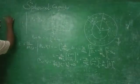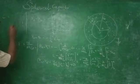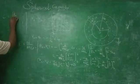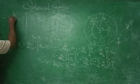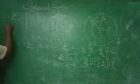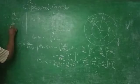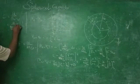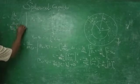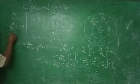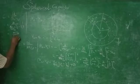Since capacitance C equals Q divided by (Va minus Vb), and Va minus Vb equals Q over 4 pi epsilon naught times (1/a minus 1/b), we get C equal to 4 pi epsilon naught divided by (1/a minus 1/b).